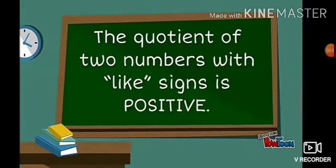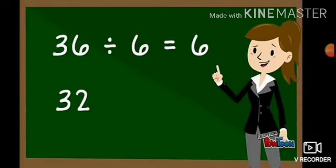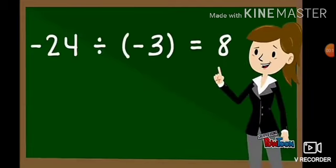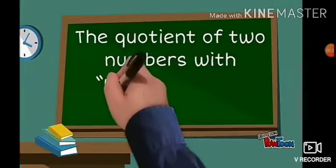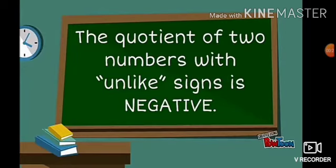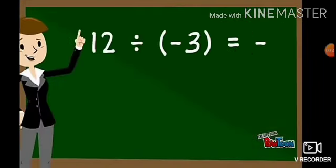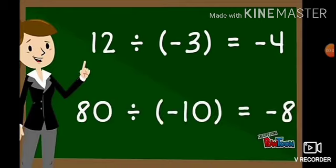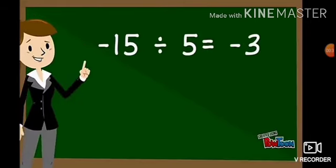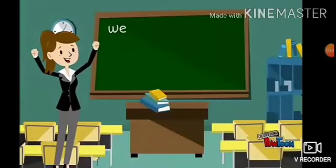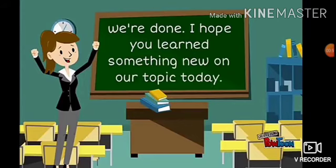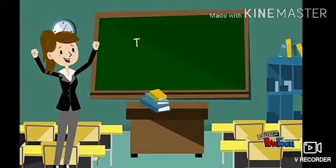Let us recall the topic once again. The quotient of two numbers with like signs is positive: 36 divided by 6 is 6, 32 divided by 4 is 8, minus 24 divided by minus 3 is 8, minus 10 divided by minus 5 is 2. The quotient of two numbers with unlike signs is negative: 12 divided by minus 3 is minus 4, 80 divided by minus 10 is minus 8, minus 15 divided by 5 is minus 3, minus 49 divided by 7 is minus 7. I hope you learned something new today. Thanks for watching.